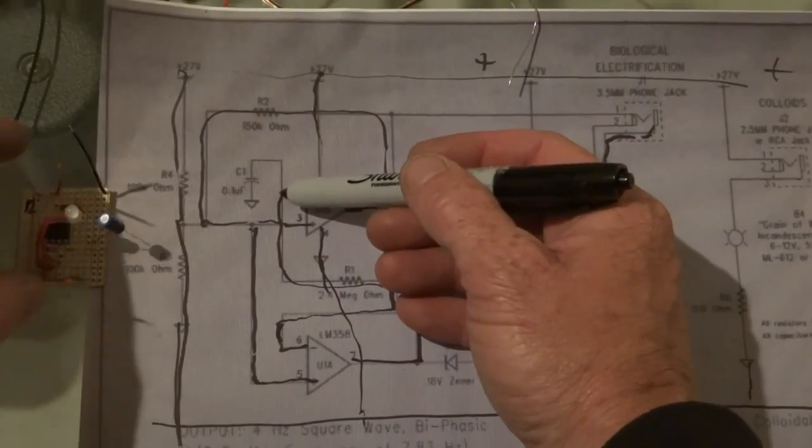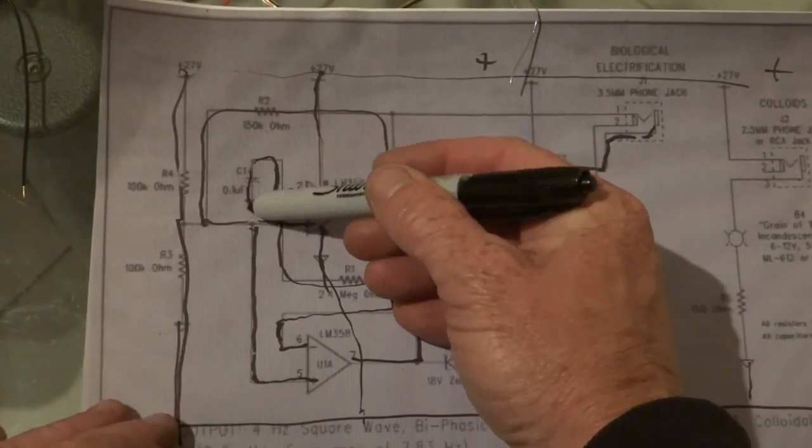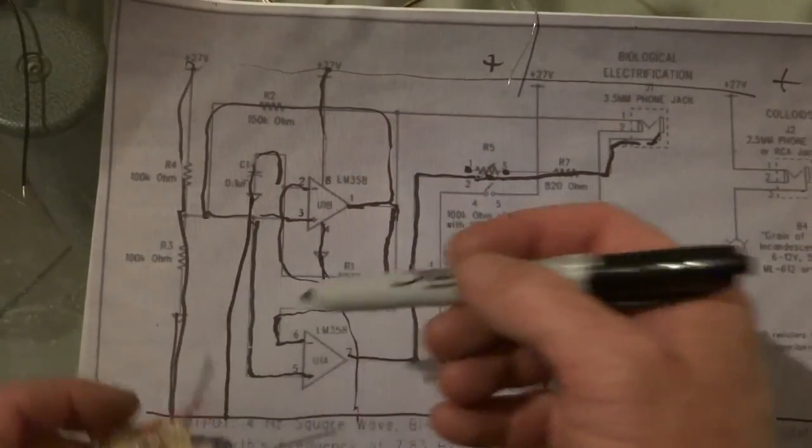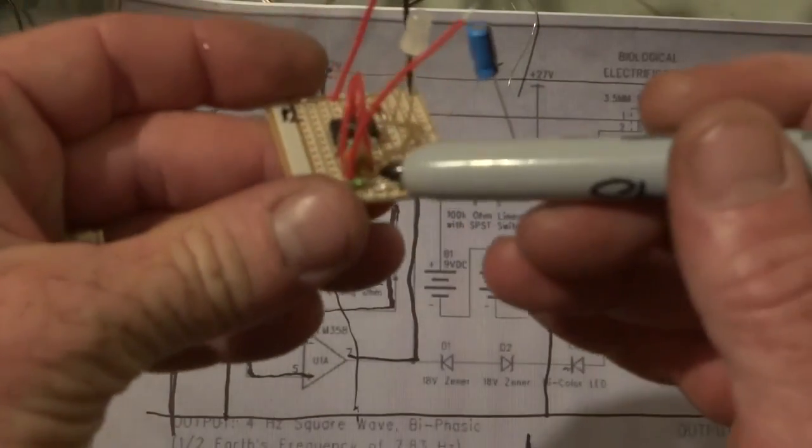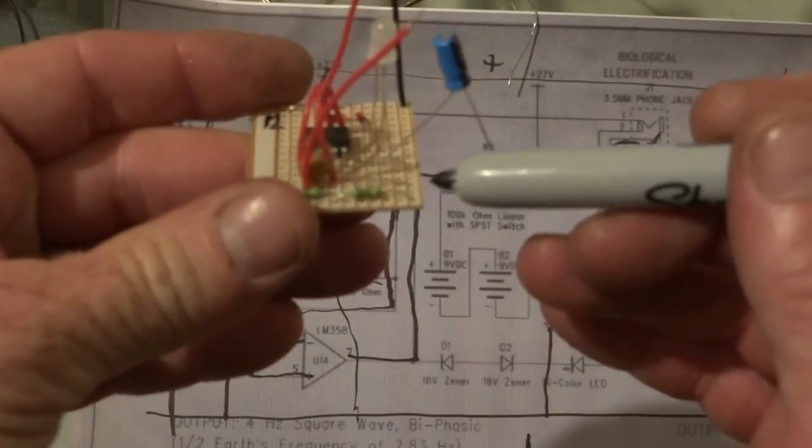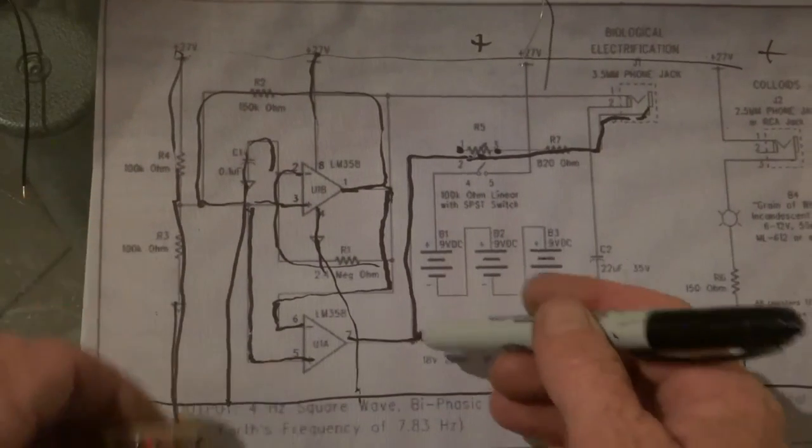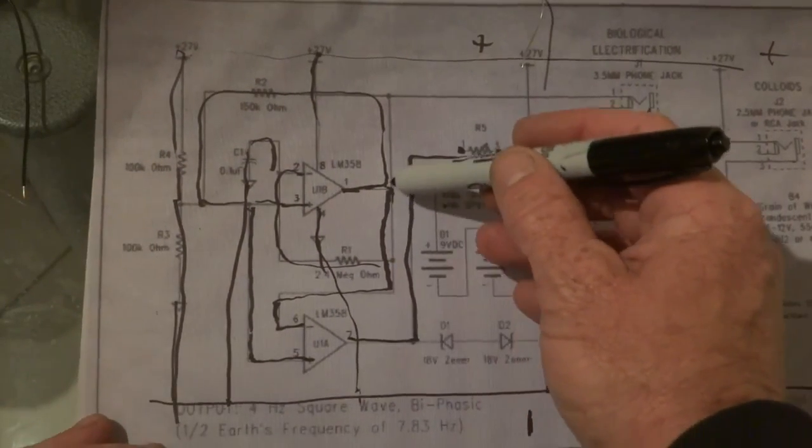Then we have this one here, which is from number two, that little brown capacitor, which goes to the negative, which is number two to the negative. So that's basically that.